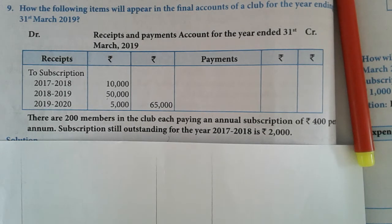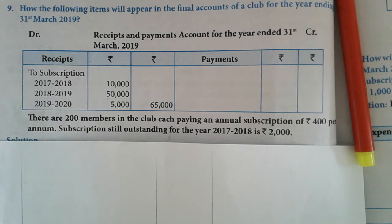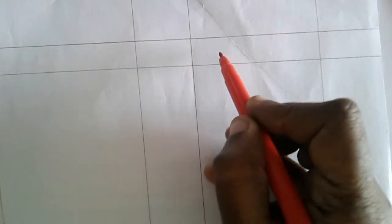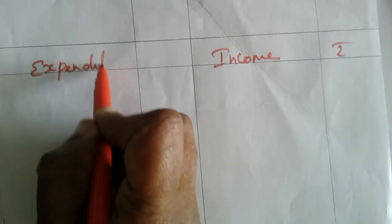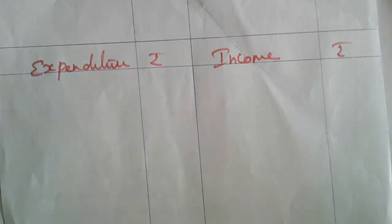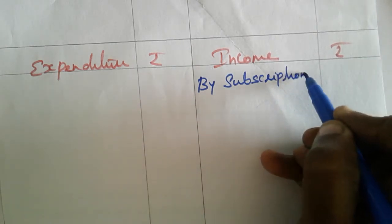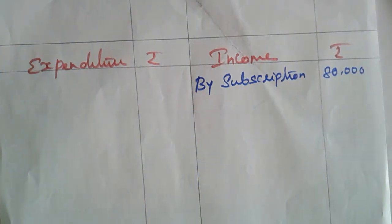We have 200 members and every member pays $400 per annum. So 200 members have to pay $400 each. 200 into 400 equals $80,000 rupees. In the income side, by subscription, $80,000 rupees.